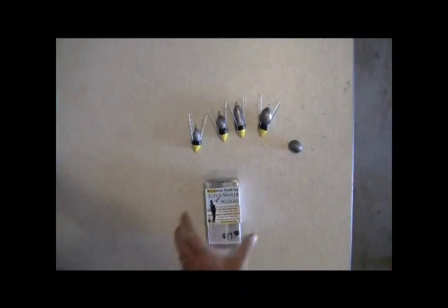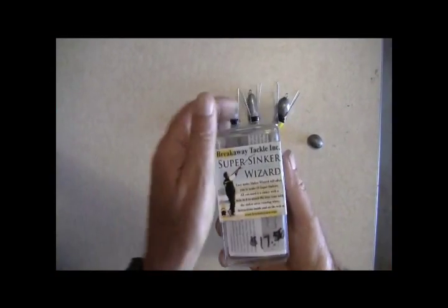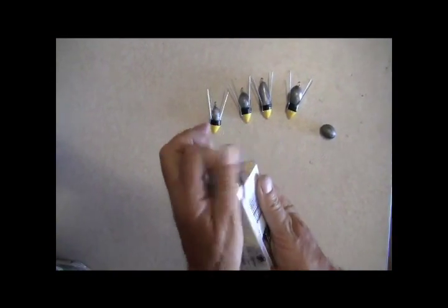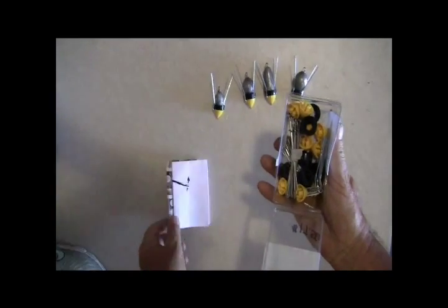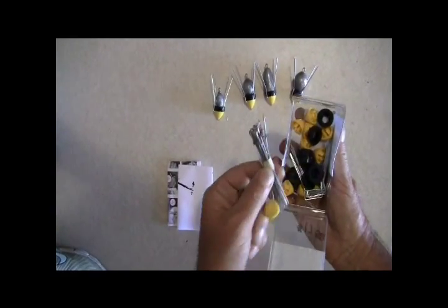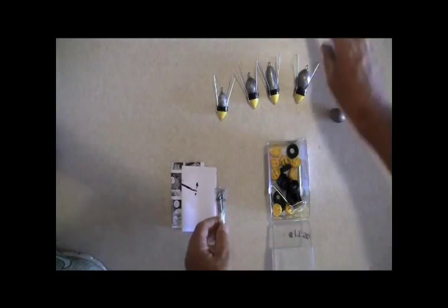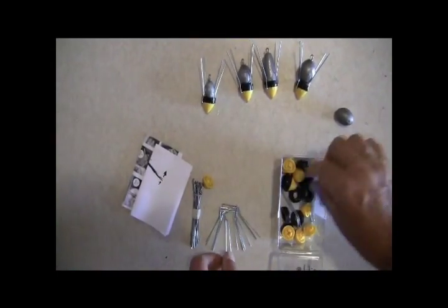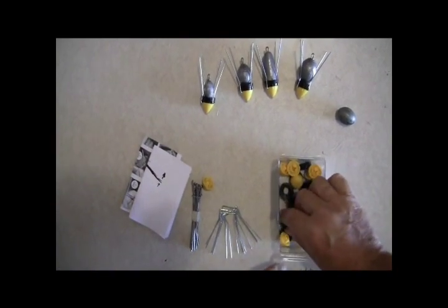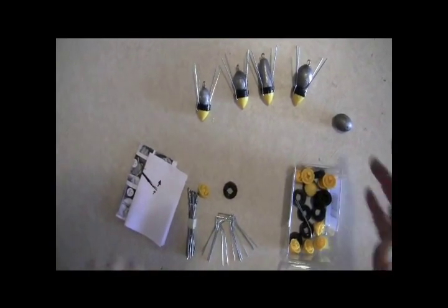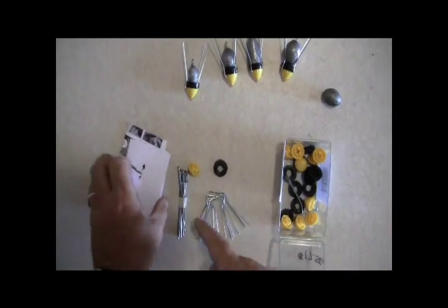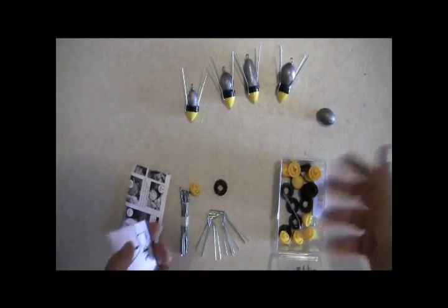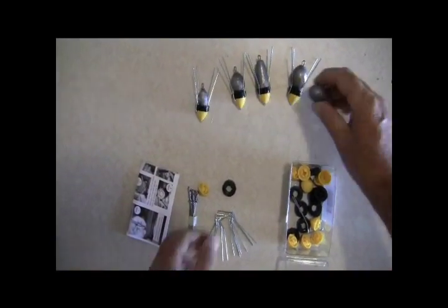Okay, this is what you get when you get the Super Sinker Wizard. Inside you got the instructions, the pins with the washers already on them, the nose cones, wires, and what we call a retainer ring. From this kit there's enough in here to make ten individual sinkers.